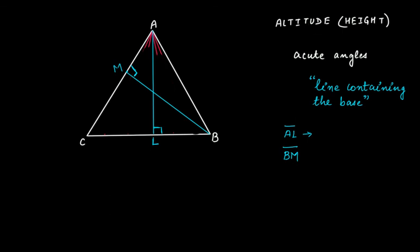Similarly, if you draw from vertex C onto side AB, which is opposite to C, that gives another altitude CN. So altitude is the line segment drawn from a vertex to the line containing the opposite side of that vertex, making a right angle.